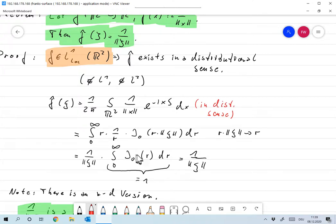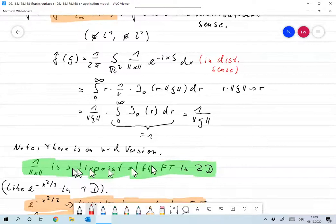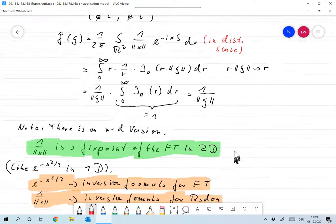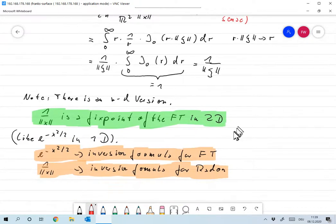And it turns out that constant is 1. And so this is nothing but 1 over the norm of xi. Okay, so in a distributional sense, we have that the Fourier transform of 1 over x is 1 over x. So 1 over norm x is a fixed point of the Fourier transform in two dimensions. And there's an interesting thing to note. I don't know whether there's a real reason for that.